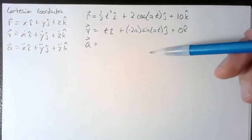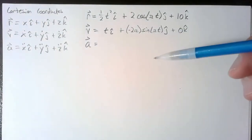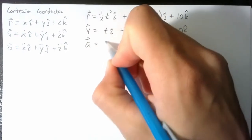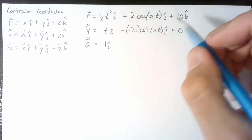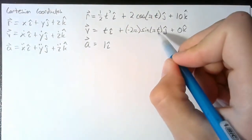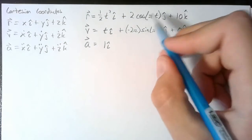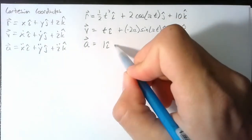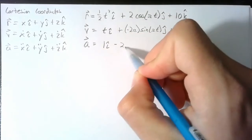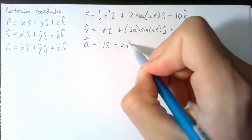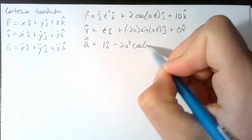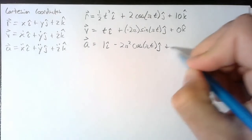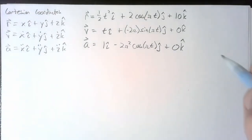To find acceleration, we take the time derivative one more time. The time derivative of t is just 1. Taking the derivative of sine gives us cosine, so this becomes negative 2π² cosine of pi t in the j-direction. The derivative of the constant is again zero.